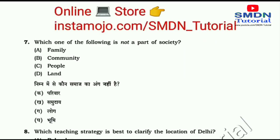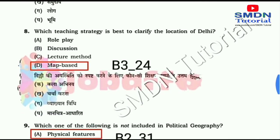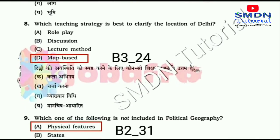Question number seven: Which one of the following is not a part of society? Question number eight: Which teaching strategy is best to clarify the location of Delhi?